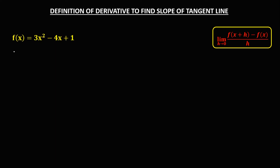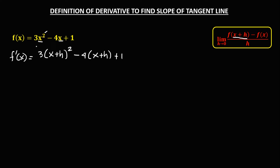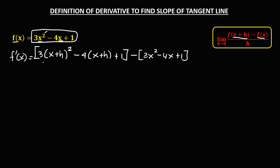For this second given, to find f prime of x, we have 3 times — again, we need to replace x by x plus h — so we have (x plus h) squared. Then bring down the constant, that's 1, then minus, for the second group, that's f of x. And f of x is the given, so minus 3x squared minus 4x plus 1, then all over h.